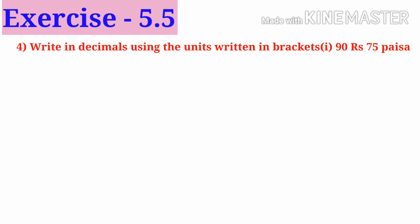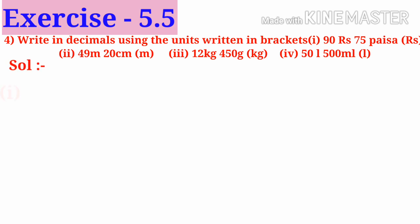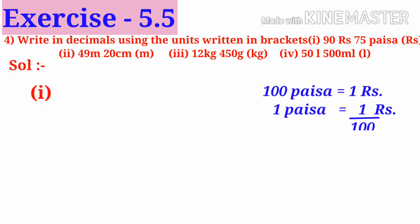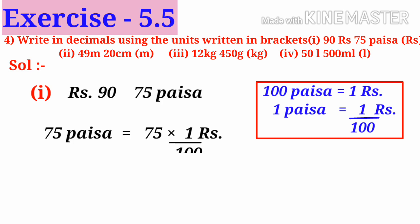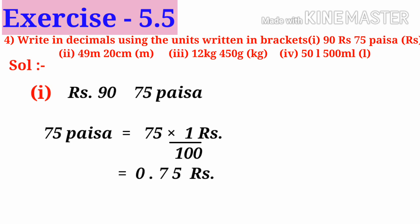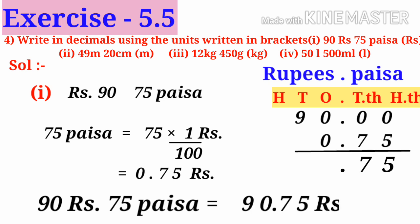Fourth problem: write in decimals using the units written in brackets. Solution, number 1: 100 paisa makes 1 rupee, so 1 paisa is 1/100th of a rupee. To convert paisa into rupees, divide by 100. In 90 rupees 75 paisa, take 75 paisa: 75 × (1/100) = 0.75 rupees. Place in exact values: 90.00 plus 0.75 equals 90.75. So 90 rupees 75 paisa is 90.75 rupees.